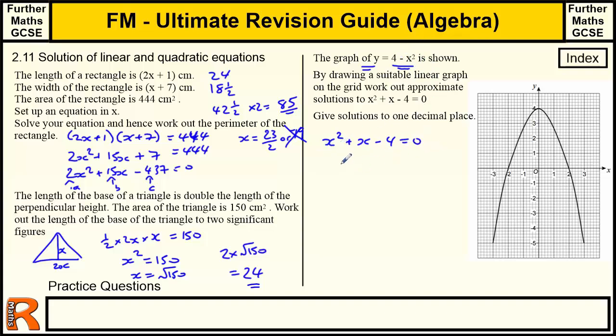So if we rearrange this x squared plus x minus 4 equals 0 to get it into this form. So we take all that over to this side. So we take the 4 over to the other side. And we want to take away the x squared. So x equals 4 minus x squared.